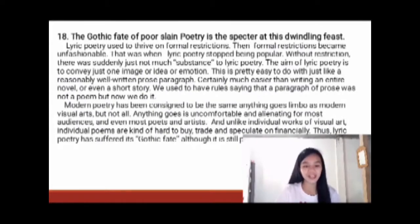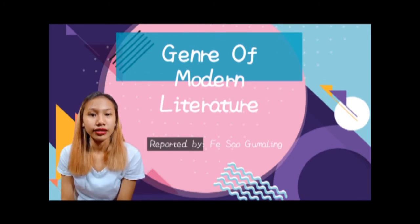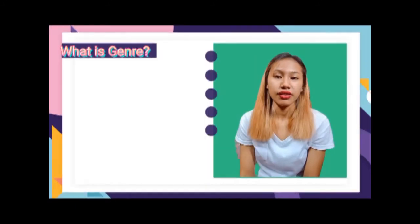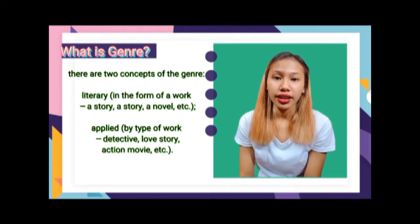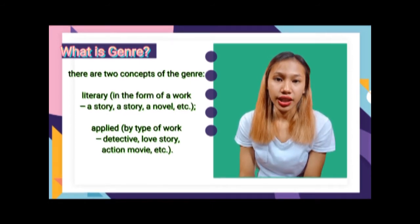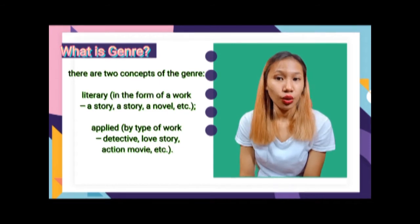Hello everyone. Today I am going to report about the genre of modern literature. So, what is genre? There are two concepts of genre. First is literary — a form or type of work which includes a story, a novel, and a genre. Second is applied — a type of work such as detective, love story, action movie, and etc.